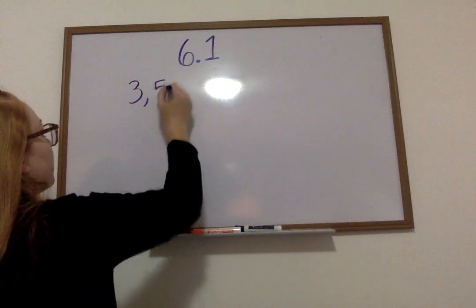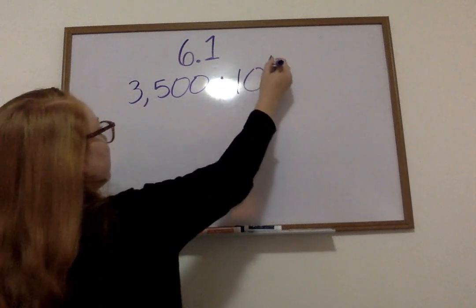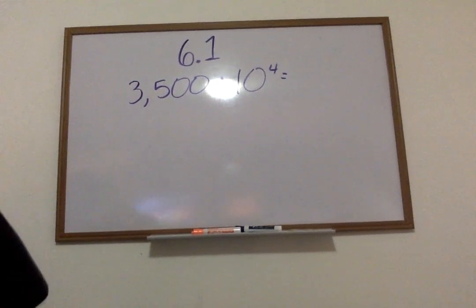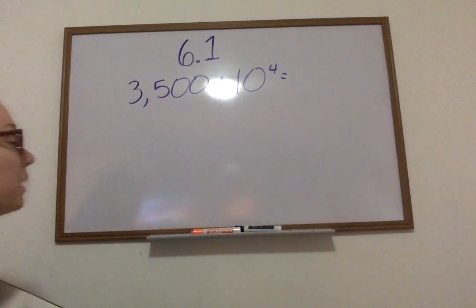If I have 3,500 divided by 10 to the fourth power. I know that I'm dividing by a product of 10. It's going to be 10 to the fourth power this time. My number is going to get smaller. It's going to move to the left.